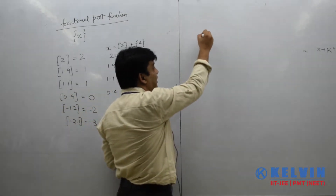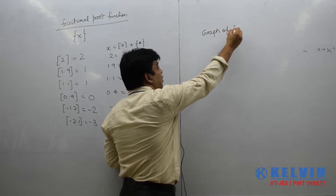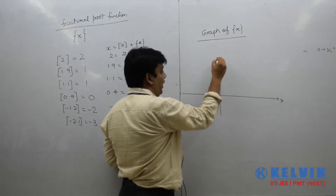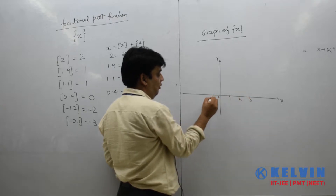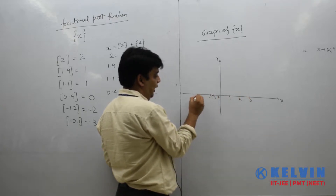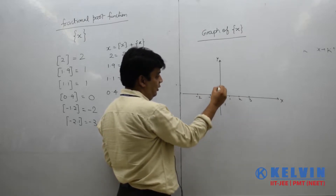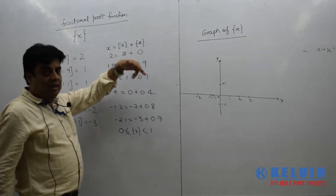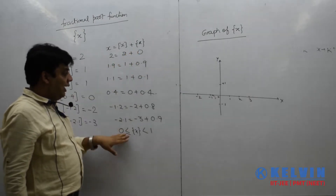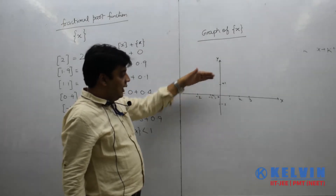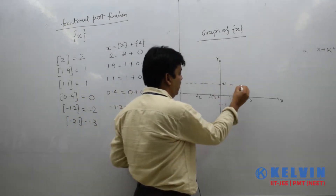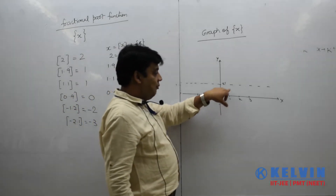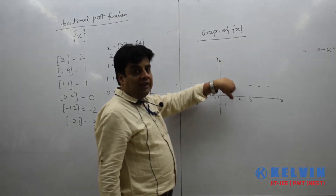Now we will study more about this function through its graph. Let us plot the graph of fractional part x. On the x-axis we mark 0, 1, 2, 3, minus 1, minus 2, and on the y-axis we mark 0 and 1. The graph of fractional part x will be confined only within this interval, since its value is always between 0 and 1. The graph can approach 1 but it is a dotted line there, because fractional part can never equal 1.